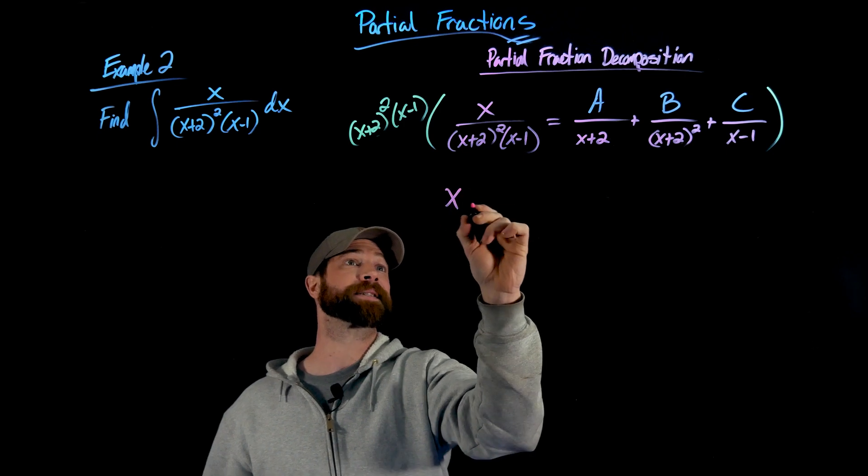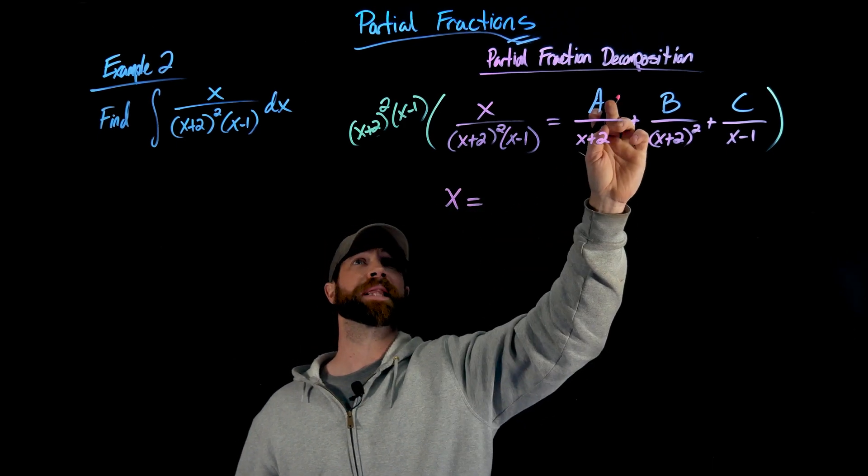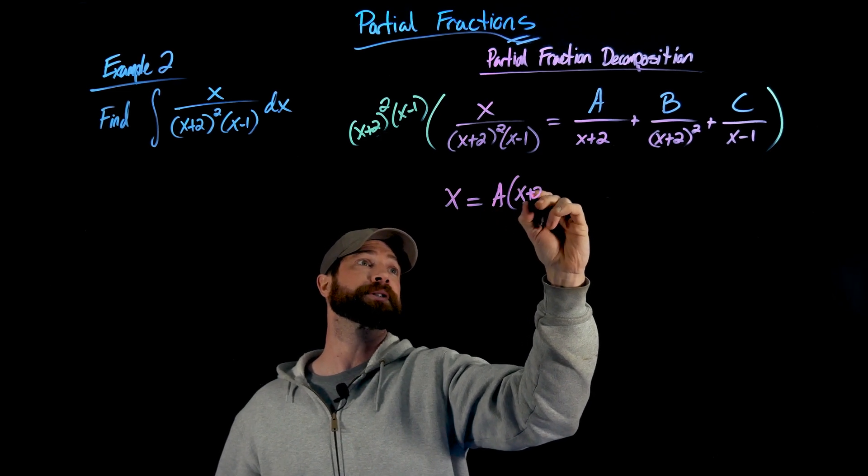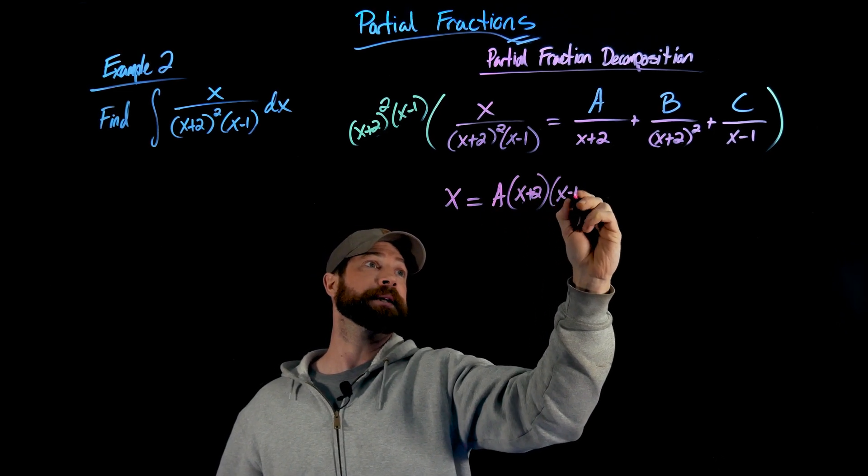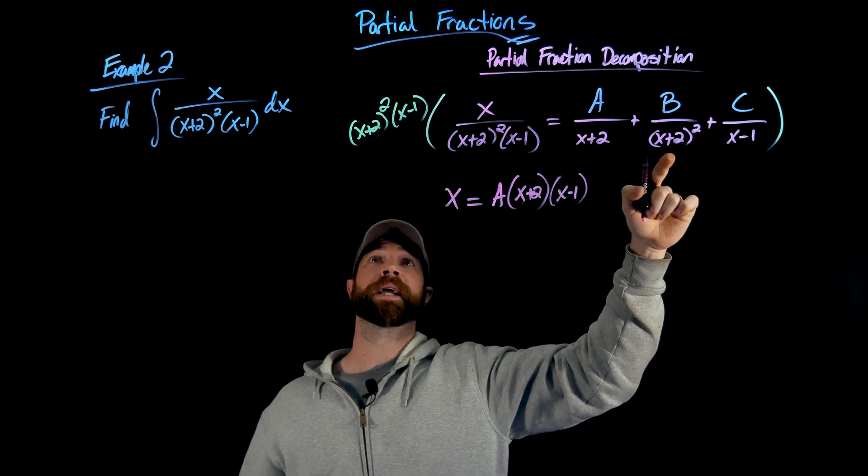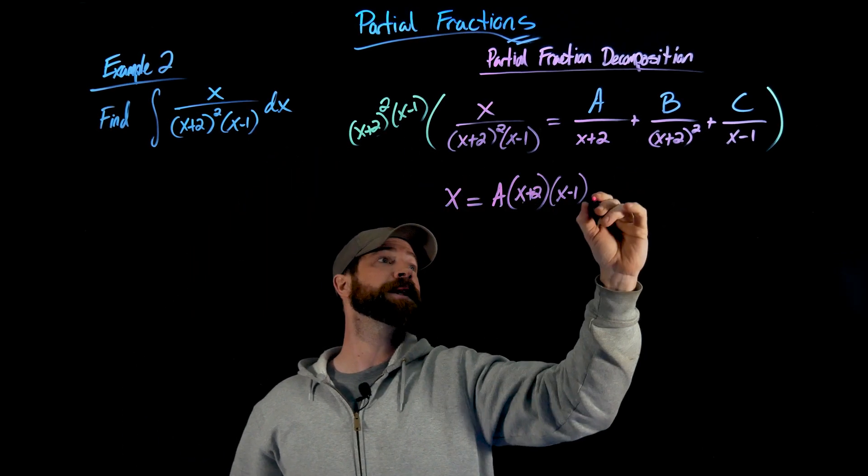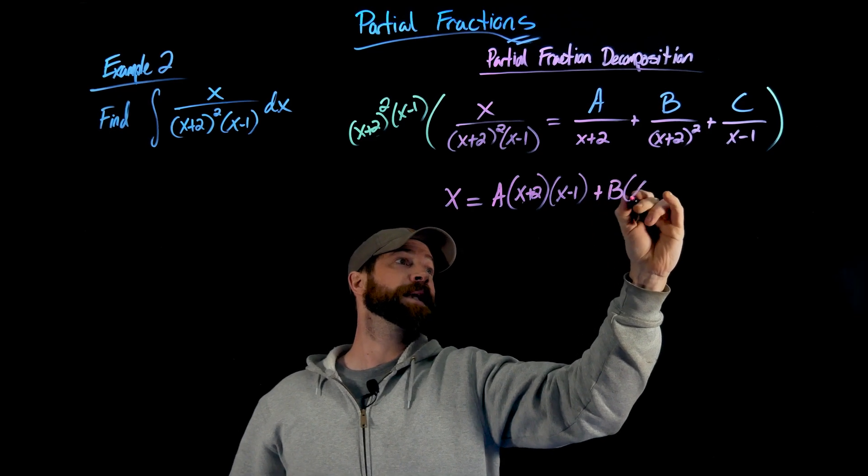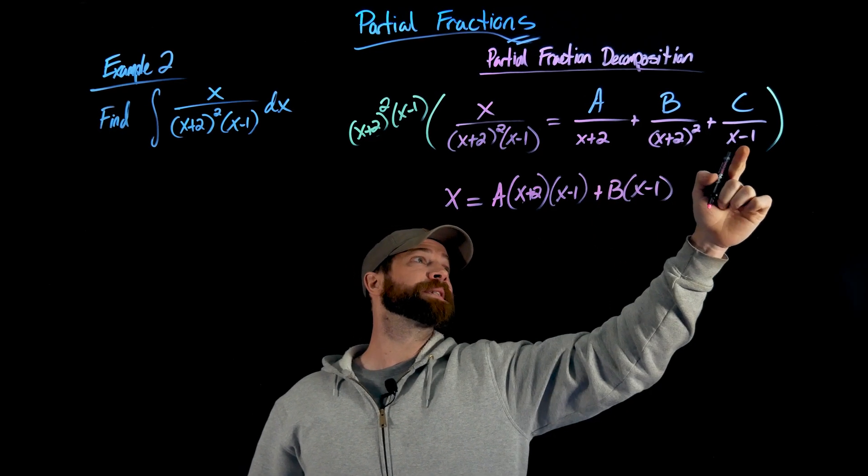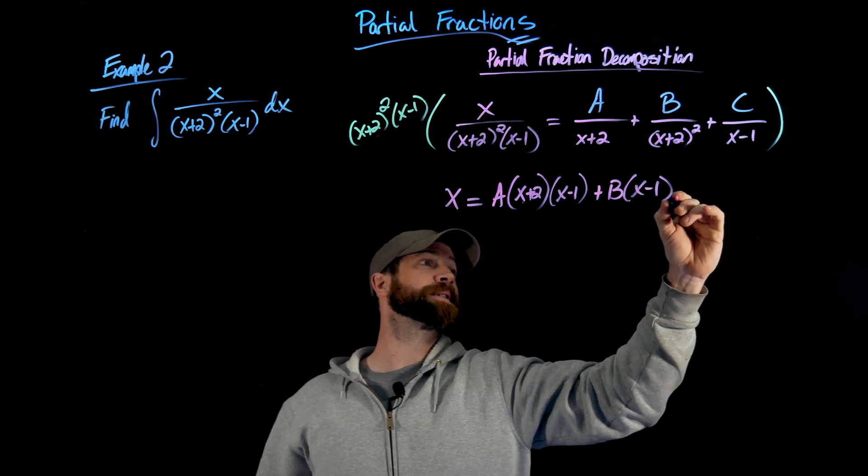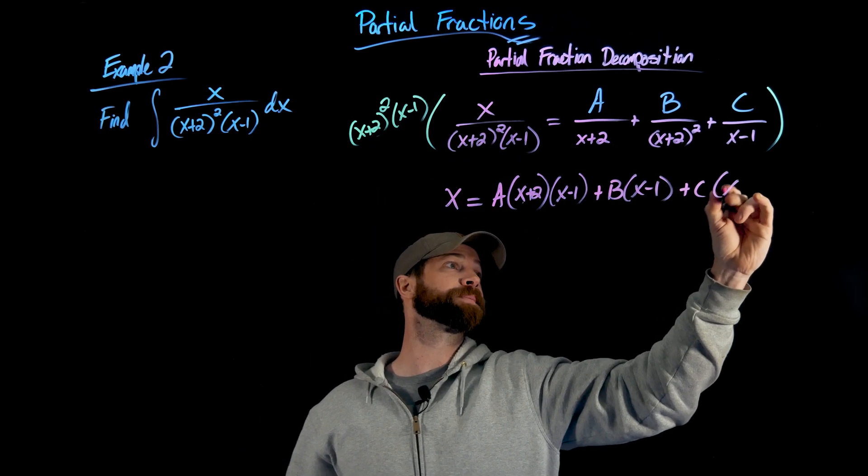And so in this case, let's have an x equals. So I multiply this. I cancel one of those. And so I'm going to get A times x plus 2 times x minus 1. In this term right here, the x plus 2 squared cancels. And so I just get B times the x minus 1. And then C here is the x minus 1 gets canceled. I just get these double factor here of x plus 2.